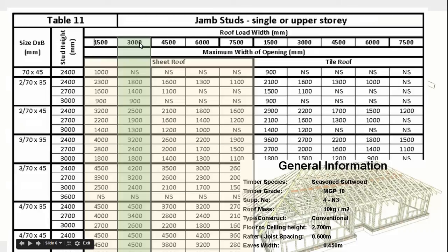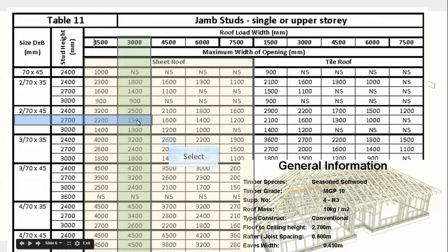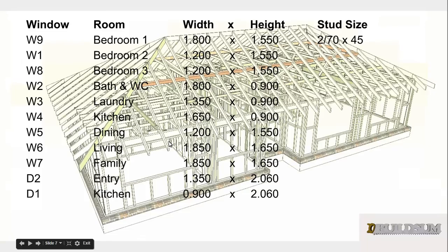We're looking for an 1800 opening, so the 1400 entry is not enough — we have to go to the 1900 entry. That gives us the size of timber we need: two 70 by 45s. We can't round up to a 90 by 35 instead, as we don't want to make the wall any thicker, so we stick with 70 by 45. We go back to our table and enter two 70 by 45s.